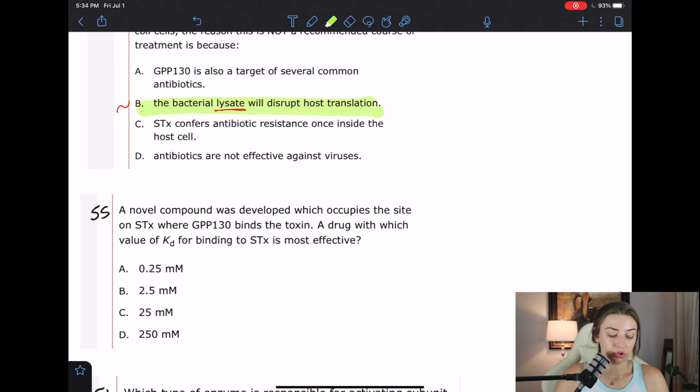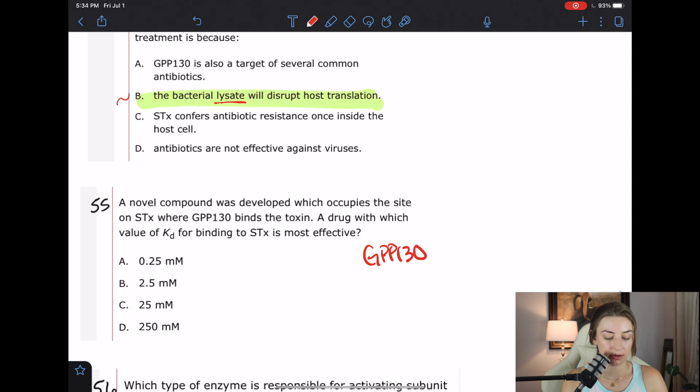Question 55 says a novel compound was developed which occupies the site on Shiga toxin where GPP-130 binds the toxin, a drug with which value of KD for binding to Shiga toxin is most effective. So we were told that the GPP-130 binds to the Shiga toxin with a KD of 25 millimolar, I believe it was. So we definitely want something that binds a lot better than the GPP-130, right? That makes logical sense. This question I really think is asking, do you know what a small versus a large KD would indicate? So in this case, you should know that as KD gets smaller, that means that the binding is actually going up. If you think about it, you can think about KD as how much dissociation is happening. So if it's a higher number, that would mean more dissociating and we want it to be stuck together really well. So we want a low KD. So in this case, you just pick the lowest one and that's that.